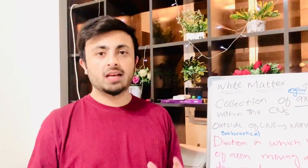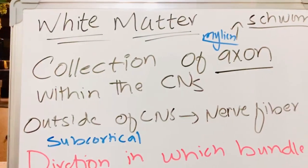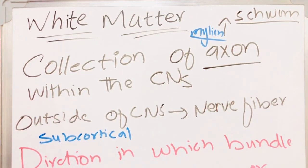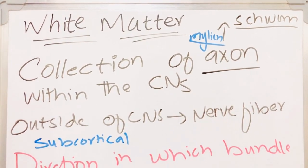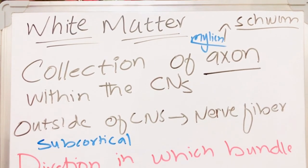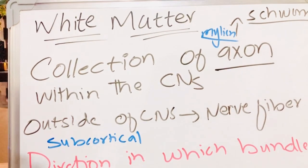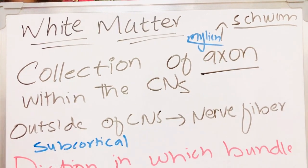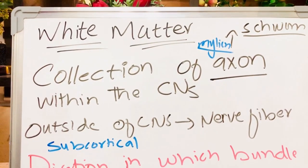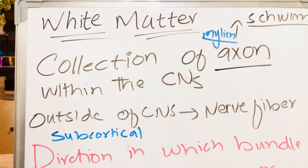Now, white matter: white matter is the collection of axons within the central nervous system. To recap: gray matter is the collection of cell bodies of neurons within the central nervous system, while white matter is the collection of axons within the central nervous system. White matter is white in color because of the myelin — the axons are myelinated by myelin and are made up of Schwann cells. If this collection of axons exists outside the central nervous system, it is called a nerve fiber.